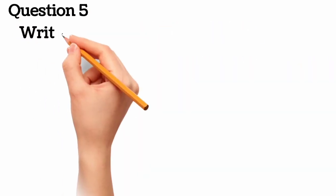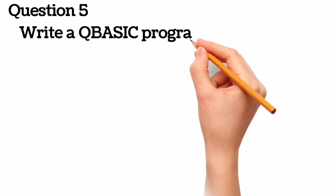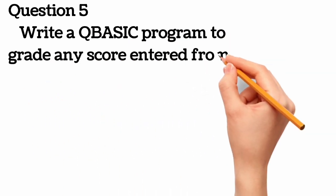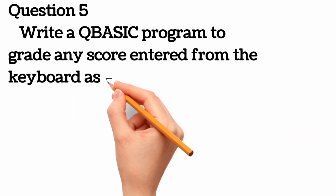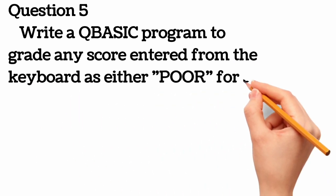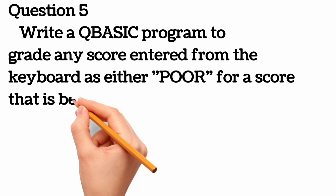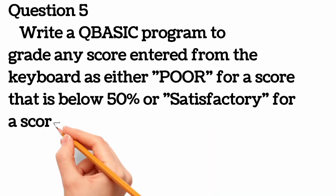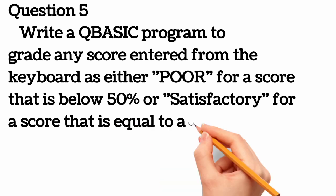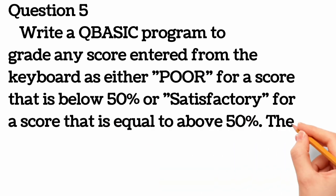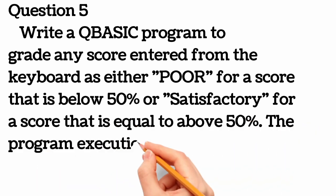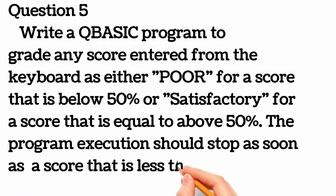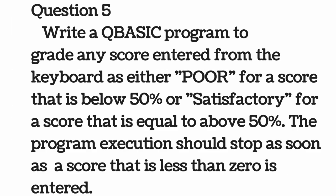We are now on the last question, question 5. We are to write a QBASIC program to greet any score entered from the keyboard as either unsatisfactory for a score below 50 percent or satisfactory for a score above 50 percent. The program execution should stop as soon as a score less than zero is entered.